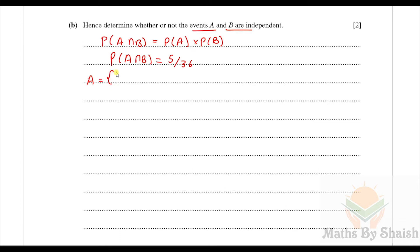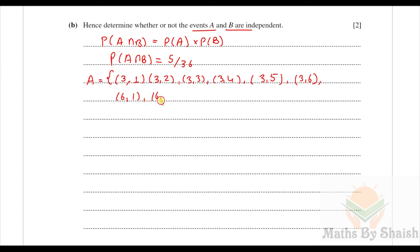To find P(A): event A occurs when the red die shows a multiple of three. If red is three, blue can be 1 through 6 (six outcomes); if red is six, blue can be 1 through 6 (six outcomes). So there are 12 favorable outcomes out of 36, giving P(A) = 12/36 = 1/3.